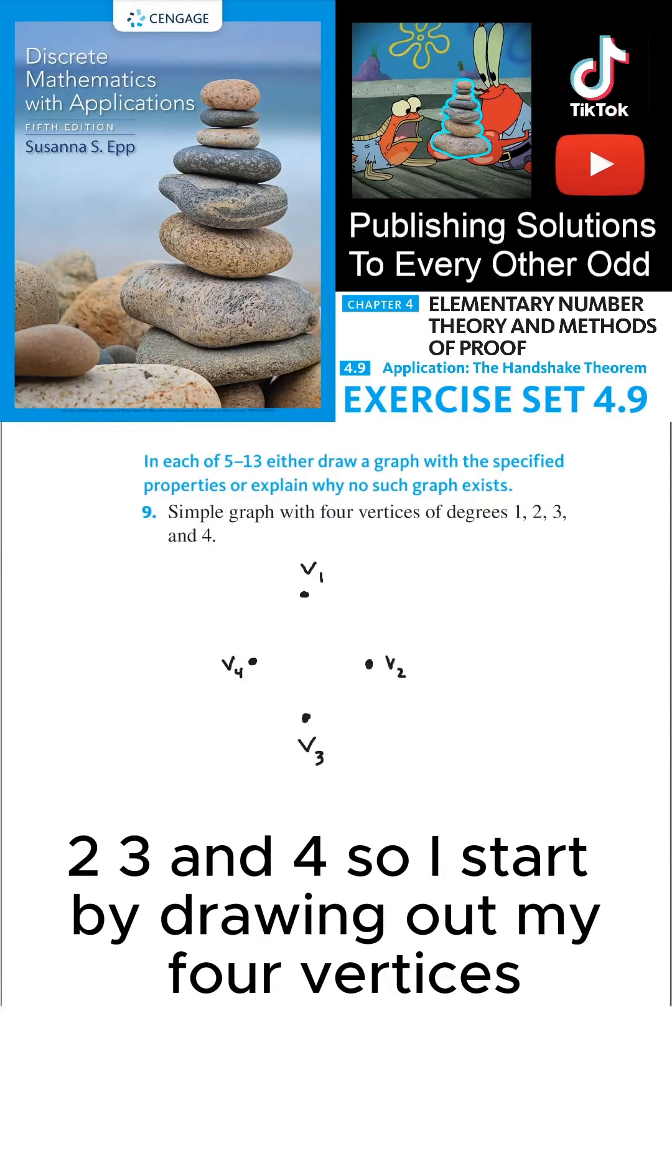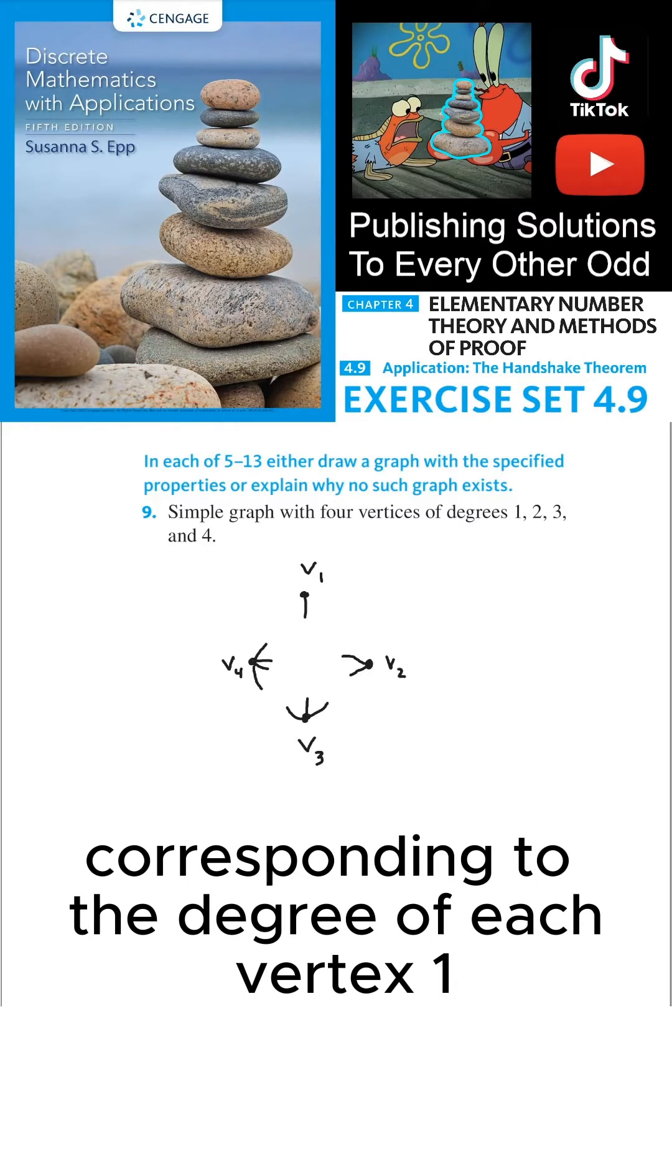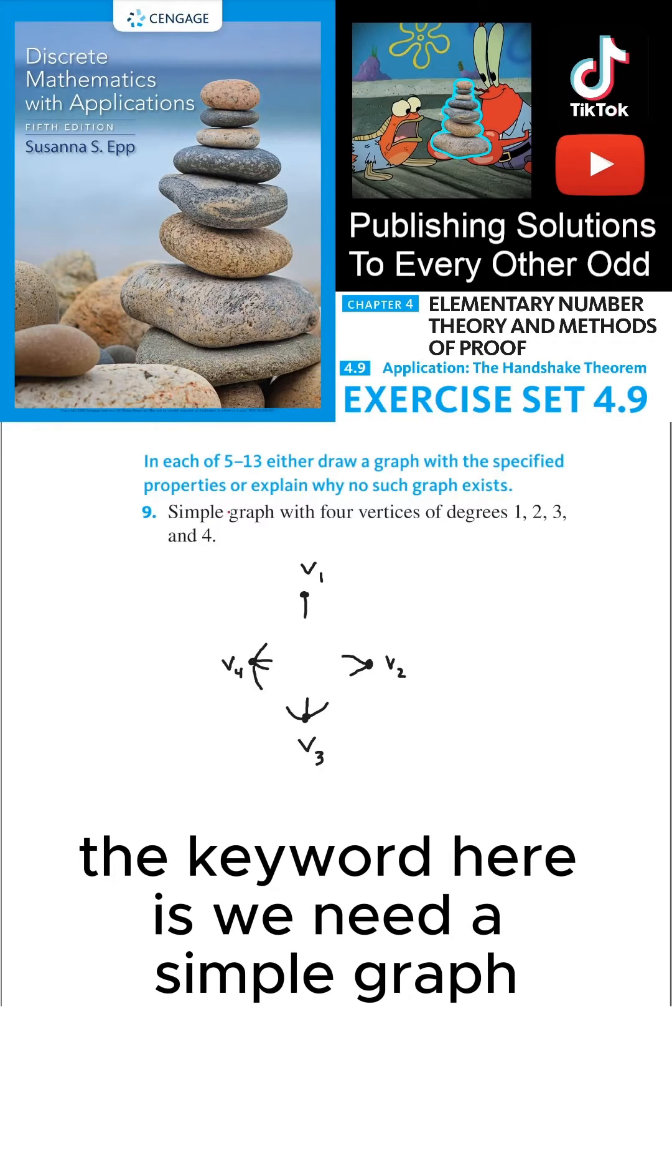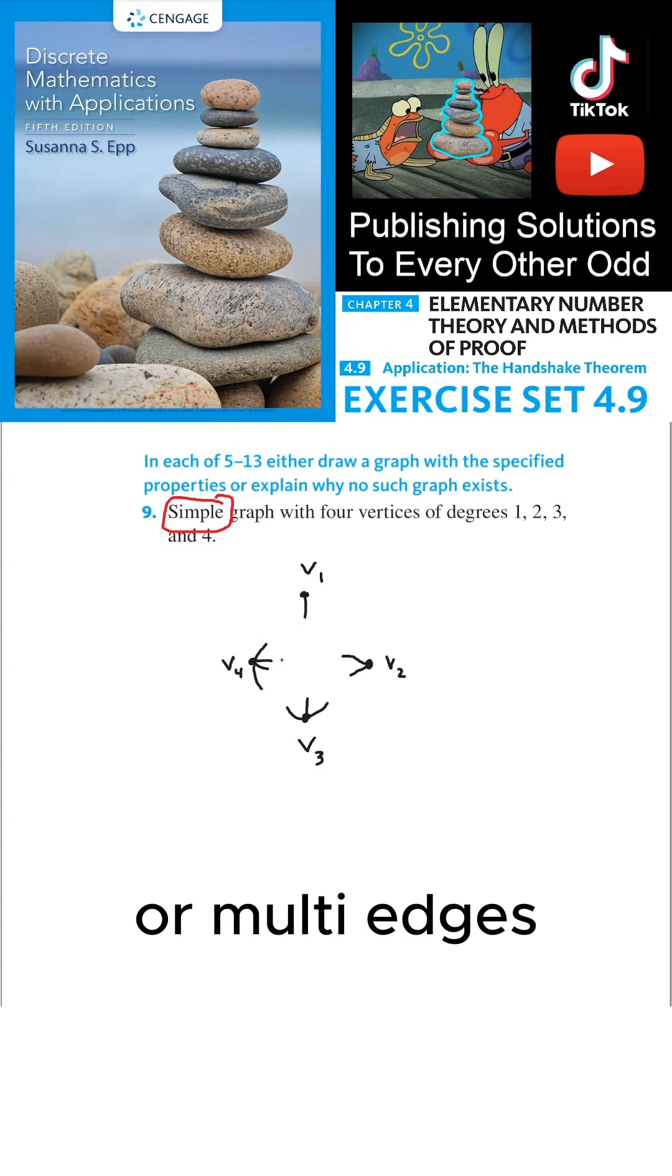So I start by drawing out my four vertices, and then I draw lines coming out from the vertices corresponding to the degree of each vertex: 1, 2, 3, and 4. Now the key word here is we need a simple graph, which means that we can't allow for loops or multi-edges.